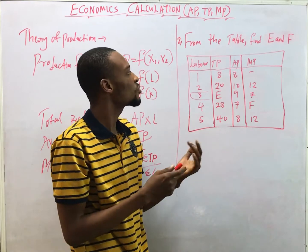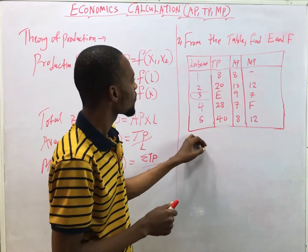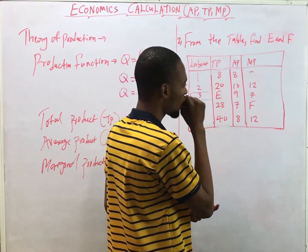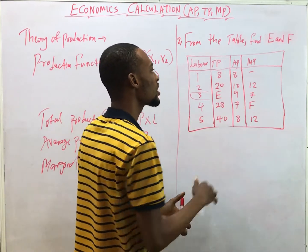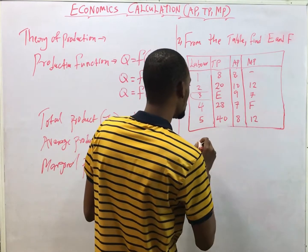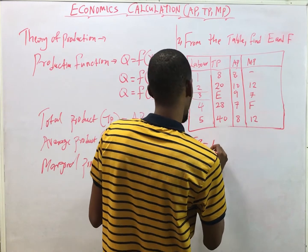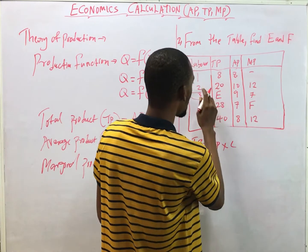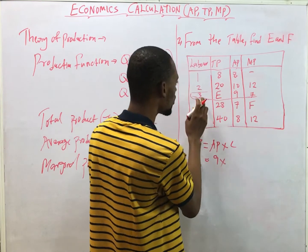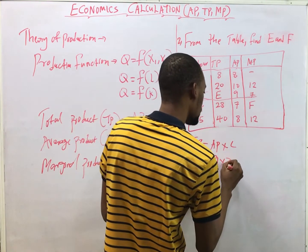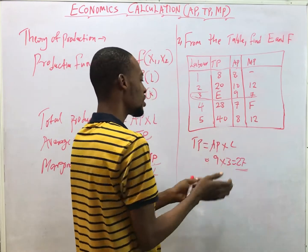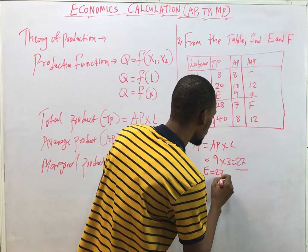Question 2 is pretty similar. The table shows Labor, TP, and AP. We need to find e and f — e is Total Product and f is Marginal Product. The complete Average Product column is given. Total Product equals Average Product times Labor. The Average Product corresponding to labor 3 is 9, so TP equals 9 times 3 equals 27. Therefore e equals 27.